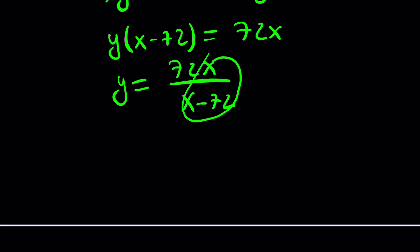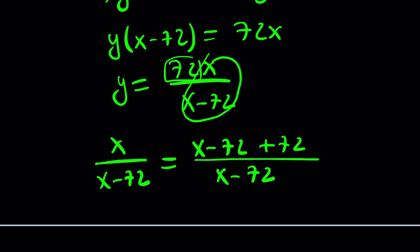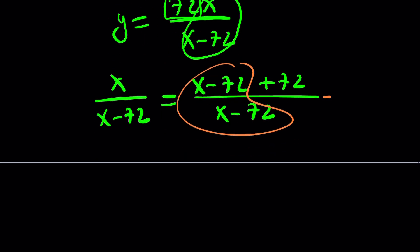So forget about the 72 for now, because that'll complicate things. Why don't we just focus on this? I can just subtract 72 and then add 72. Boom! We're even. So this works, and this is good, because now I can split it up, and this will give me one, as you know.